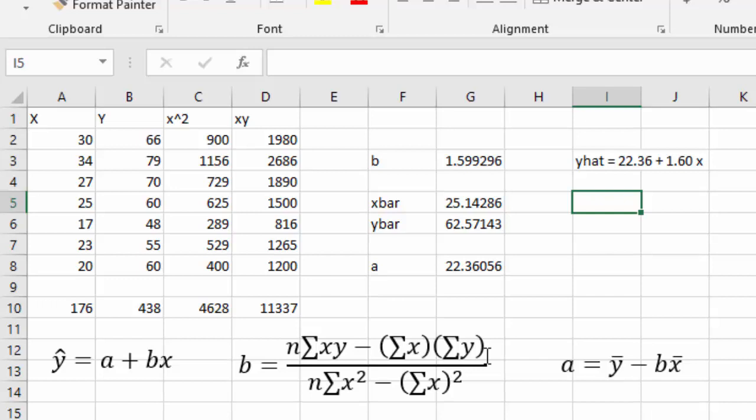Now that we have our equation of 22.36 plus 1.6x we're ready to make that prediction. Remember the question was asking about 24. When x is 24 what is our y hat? We can hit equals 22.36 plus 1.60 times and our x value is 24. We would predict the wolf population to be about 60 or 61.